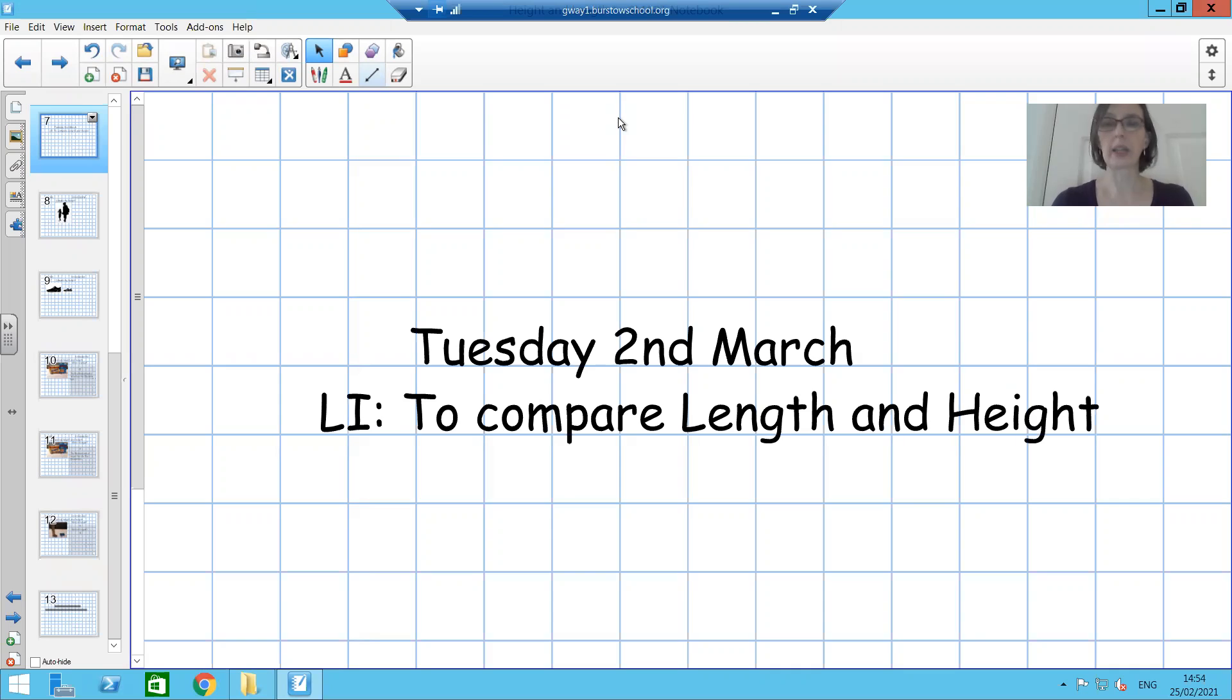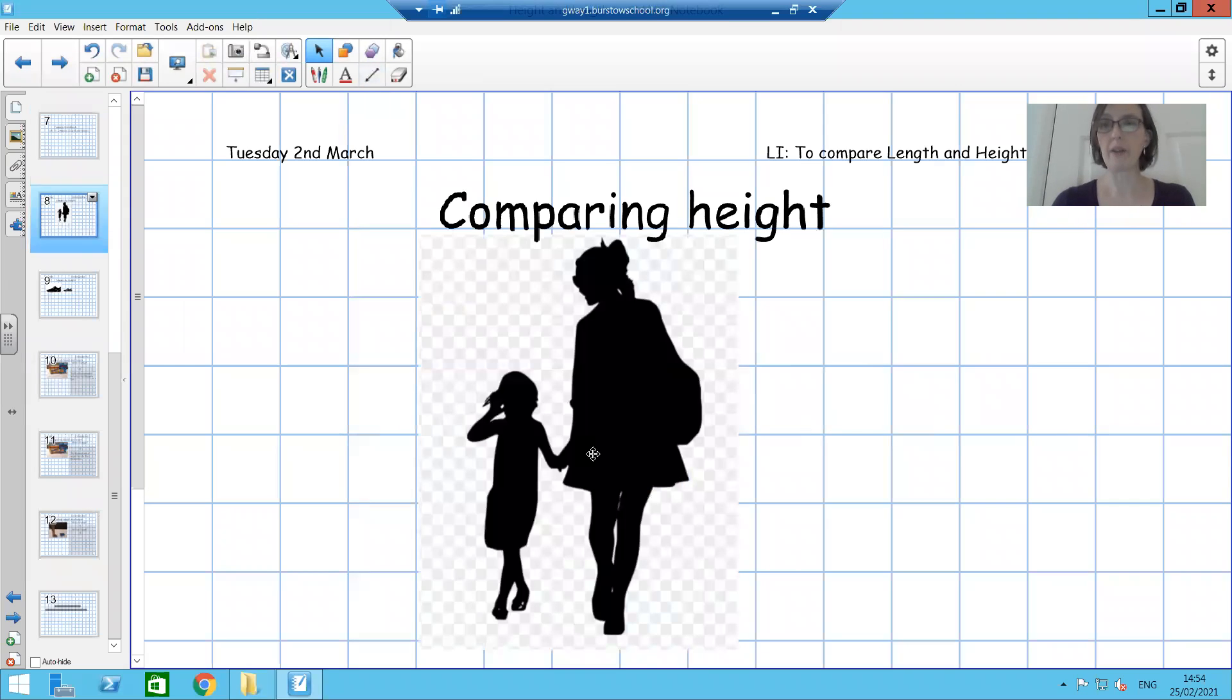And you were looking at the different lengths and heights of people in your family or shoes. So when you were comparing your family members, you were looking at height. Who was the tallest in your family? Who's the shortest in your family? So pause the video in this picture. Who is the tallest? Is it the lady here or is it the child? Okay, hopefully you've spotted that the lady is the tallest and the child is the shortest.